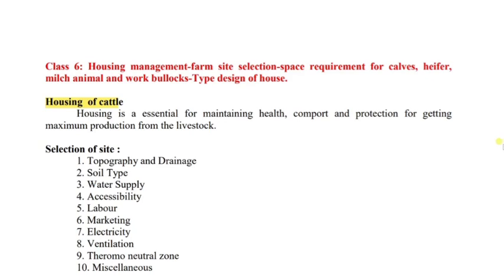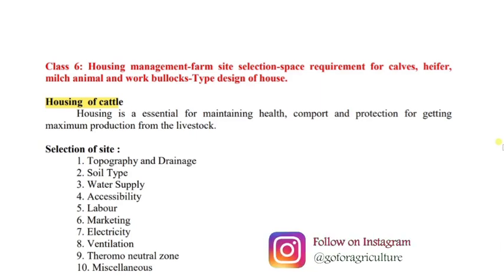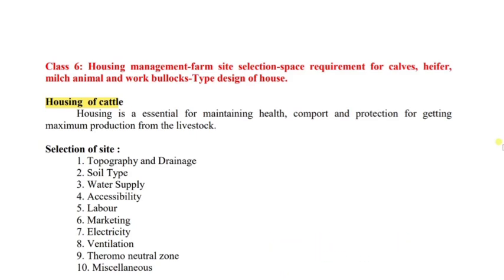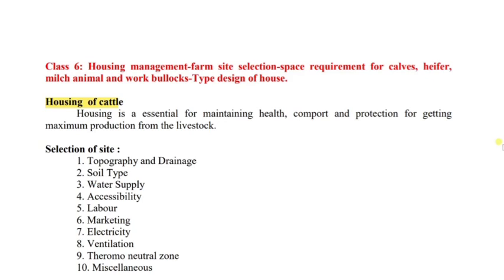First, Housing of Cattle. The main question is: why is housing very important? We are rearing cattle as part of agriculture. At the end, the main motto is to have maximum production from the livestock — milk or anything. So if we need maximum production, we have to give them proper health, proper food, proper comfort, and proper protection from diseases and harsh climatic conditions. We have to give them the proper housing requirement.